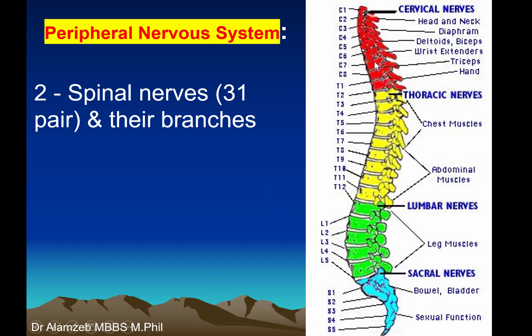Among them, 8 are Cervical Nerves, 12 are Thoracic, 5 are Lumbar, and 5 are Sacral Nerves, all of which originate from the Spinal Cord.